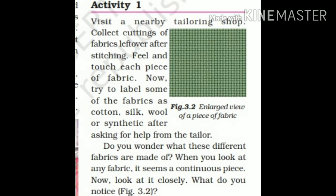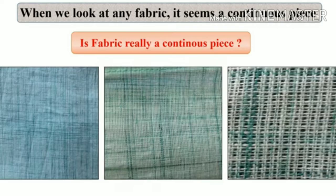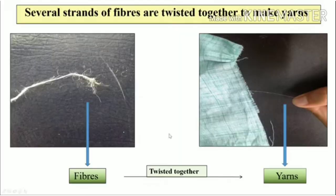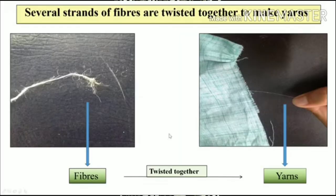So there are two activities. In Activity 1, when we look at any fabric, it seems like a continuous piece. But is fabric really a continuous piece? Take any fabric at home for even more understanding — try taking a picture of the fabric by zooming your camera. What did you notice? You will observe that fabric is made up of two strands arranged in a horizontal and vertical fashion. So in Activity 2, we will find out what this...